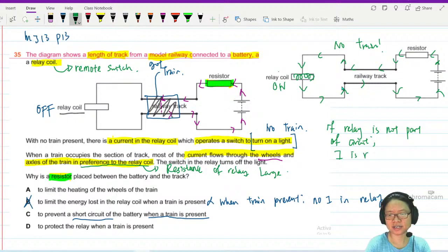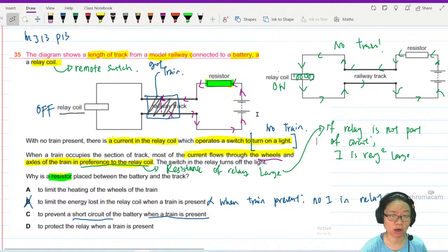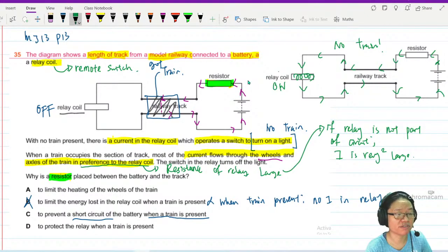Current is very very very large, because the resistance of the relay is very large. And what happens when the current is very large? Maybe it will spoil the power supply, maybe it will spoil something, maybe it will electrocute a passenger who accidentally touched the wheel of the train. So basically C is very viable - to prevent short circuit of the battery when the train is present. To protect relay when the train is present? Also wrong, because when train is present, no current in the relay.